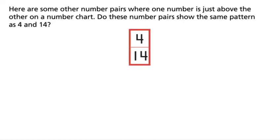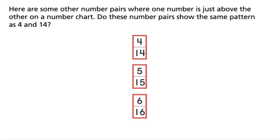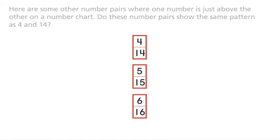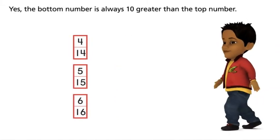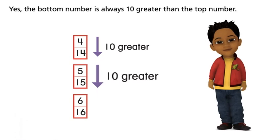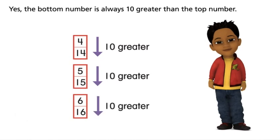Here are some other number pairs where one number is just above the other on a number chart. Do these number pairs show the same pattern as 4 and 14? Yes. The bottom number is always 10 greater than the top number.